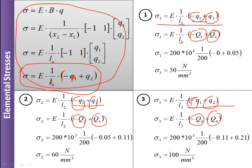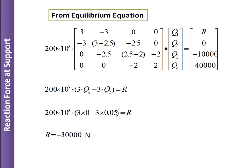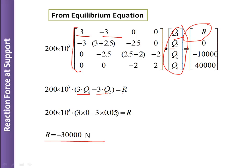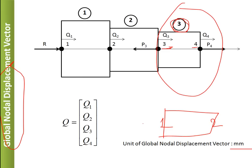Finally, to find the reaction force R, we write the first row of the original equilibrium equation with all Q values now known: 3×Q1 - 3×Q2 = R. Since Q1 = 0, this simplifies to -3×Q2 = R. Substituting the known value of Q2 gives the reaction force. Friends, refer to this video again and again, and try to solve the numerical along with the video. For any queries, you can meet personally.